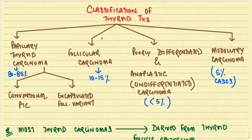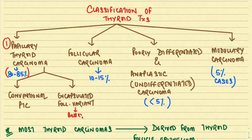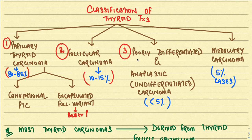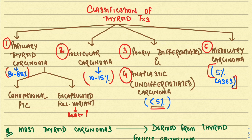Thyroid tumors can be broadly classified: papillary thyroid carcinoma accounts for around 80 to 85 percent and is divided into conventional papillary thyroid carcinoma and the encapsulated follicular variant of papillary thyroid carcinoma, which has a better prognosis. Follicular carcinoma of the thyroid comprises 10 to 15 percent. Poorly differentiated and anaplastic or undifferentiated thyroid carcinomas together represent less than five percent. Medullary carcinoma of the thyroid comprises five percent of thyroid tumors.